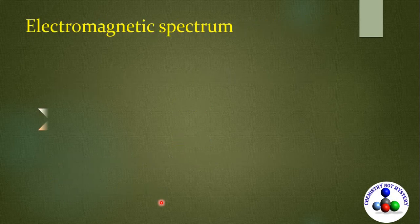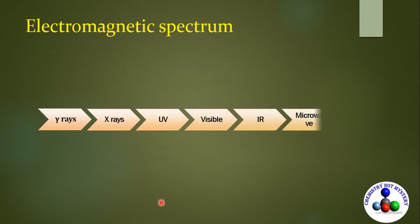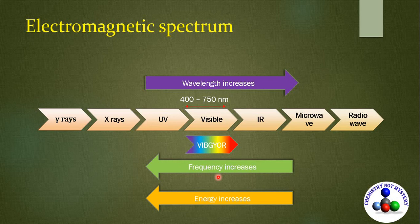Now you can understand why UV rays are harmful to us. Frequency of UV is more than that of visible light. That's why its energy is also more than that of visible light.